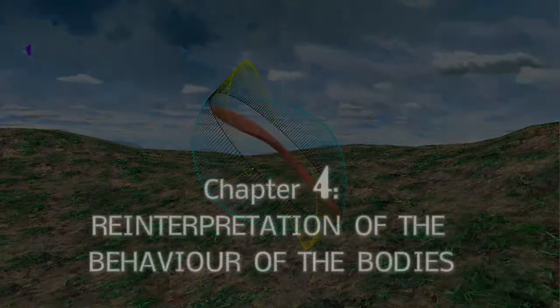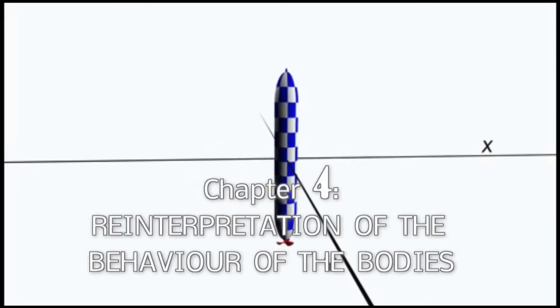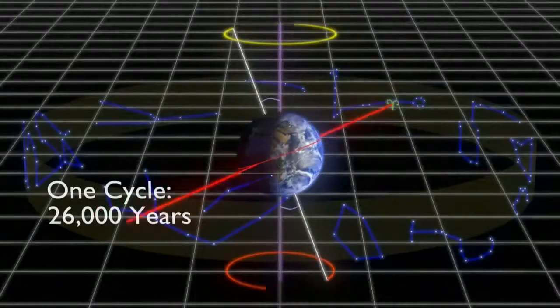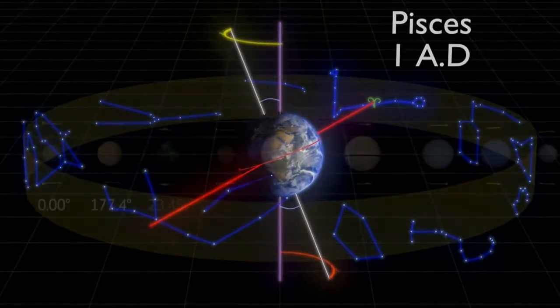In Chapter 4, Reinterpretation of the Behavior of Bodies, the initial dynamic hypotheses confirmed by these tests are reiterated. The conceptual generalization of these results to bodies in space is proposed.